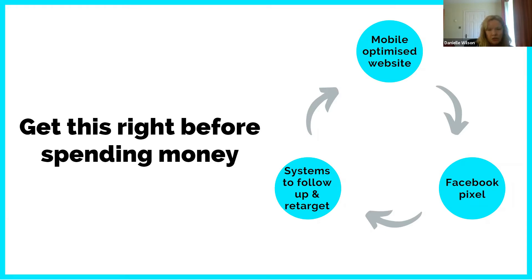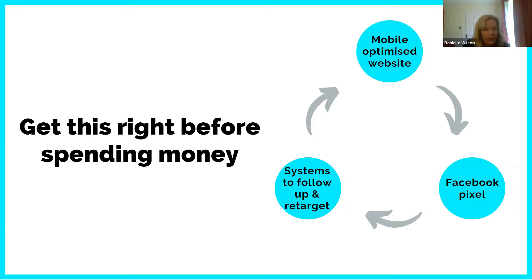Make sure your organic — your non-paid — social media is good and consistent. That's your business page on Facebook, your Instagram account, wherever you are on social media, because people will go and check them out. A quality page in Facebook's eyes also helps when you run ads because they take this into account. If you're going to have a sales funnel in place, make sure you've got systems to follow up and retarget people coming in at the top of the funnel to bring them through to the bottom where they might become buyers.